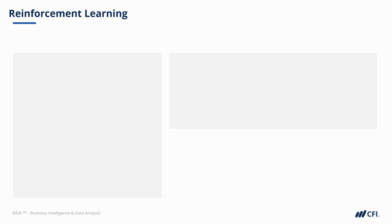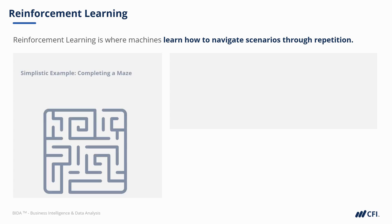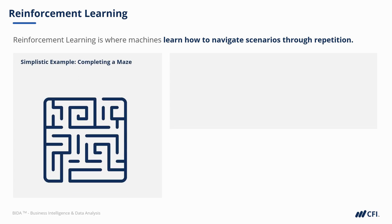Let's take a look at reinforcement learning, which is another branch of machine learning where bots learn how to successfully navigate scenarios by repeating them over and over again. Supposing a bot is learning how to complete a maze — this is admittedly a simplistic example, but let's start with this one.